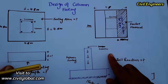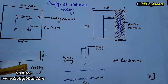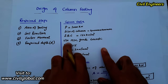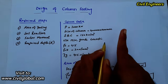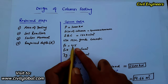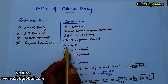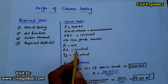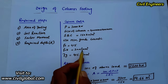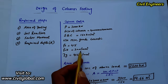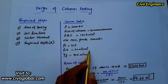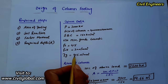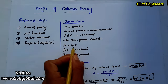We will use M20 grade of concrete, so fck — the compressive strength of concrete — is 20 N/mm². The steel grade used here is Fe415, and fy — the yield stress — is 450 N/mm² for this grade of steel.